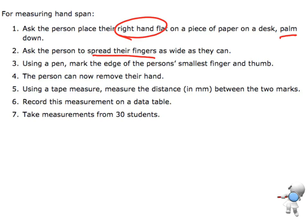So then I'm going to get them to spread their fingers as wide as they can. Using a pen I'm going to mark from their smallest finger, that edge to the edge of their thumb. And then they can move their hand. And now I'm going to use my tape measure. Measure the distance in millimeters and record that on a data table. So that's what I would want to do for my instructions.